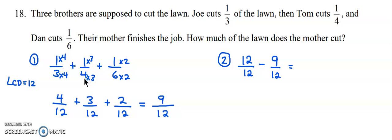And that's going to equal three twelfths. Now this fraction is not in lowest terms. We want to express our answers in lowest terms. So we're going to be dividing by three here and dividing by three to get an answer of one quarter. So mom cuts one quarter of the lawn.